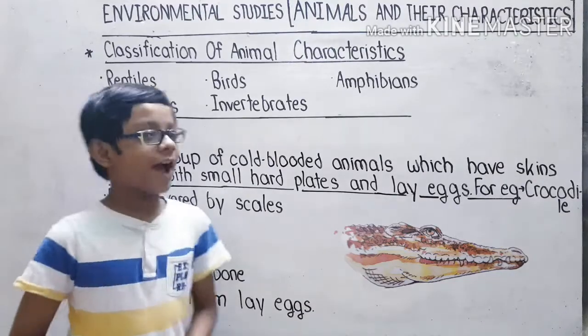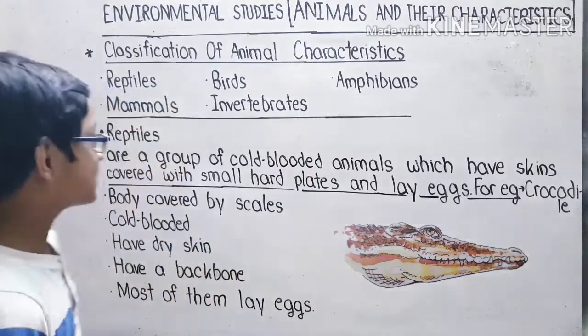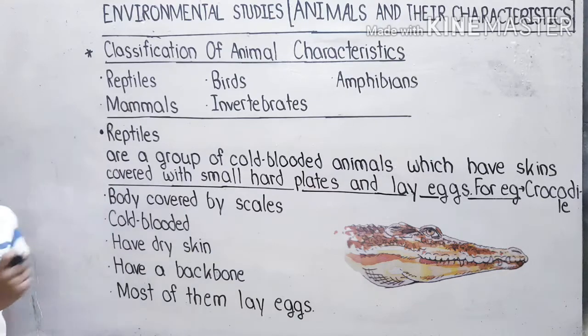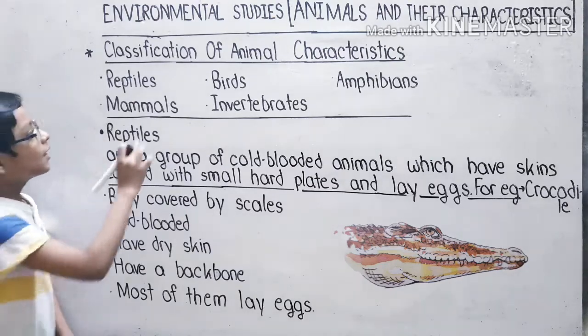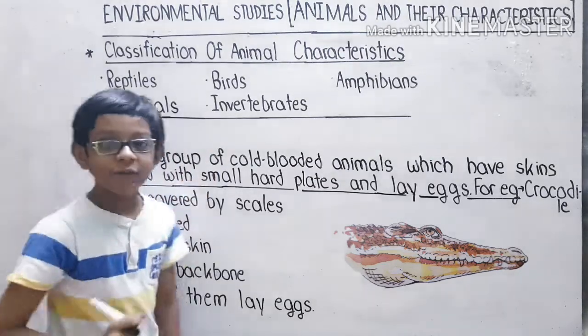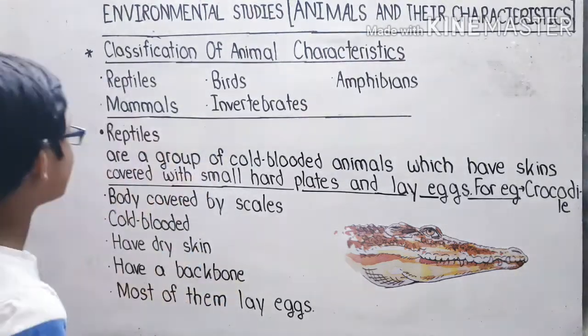Classification of Animal Characteristics. Animals are divided into different classifications, such as reptiles, mammals, birds, invertebrates, and amphibians.